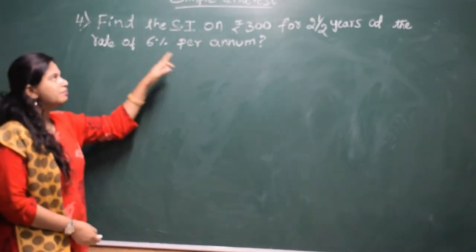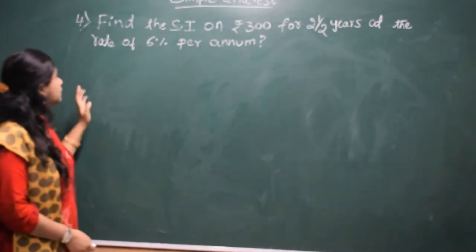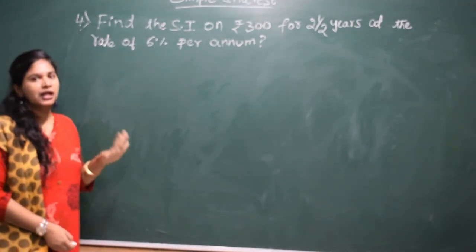Fourth problem: find the simple interest on Rs. 300 for two and a half years at the rate of 6% per annum. Paranam means per year.